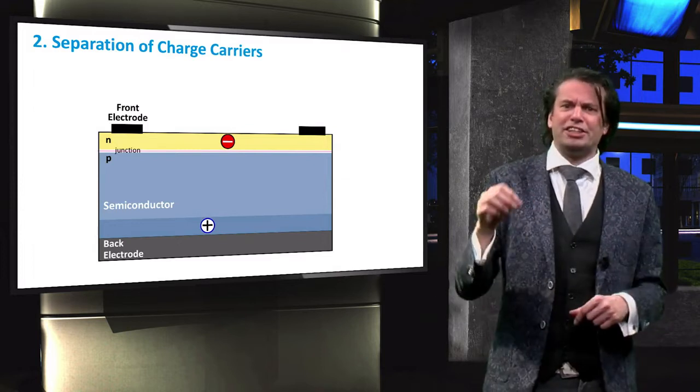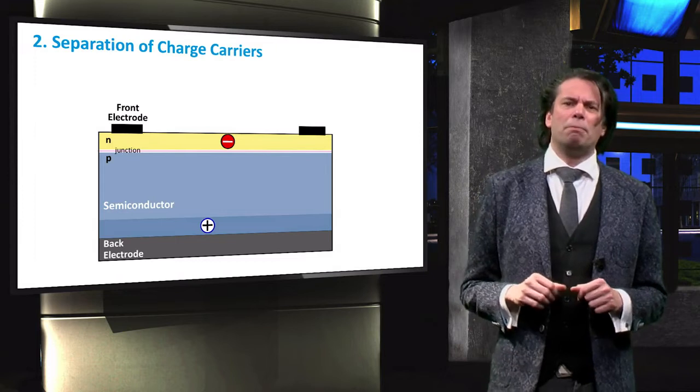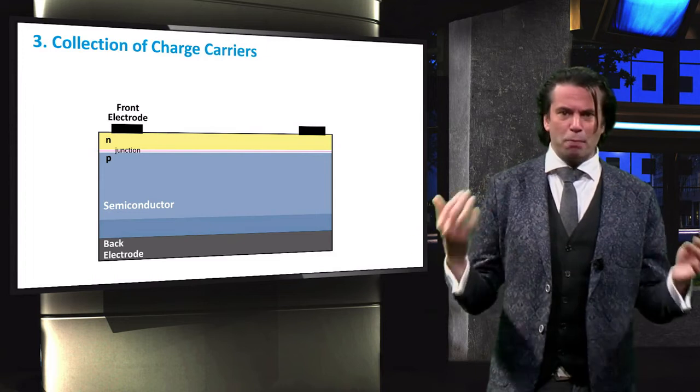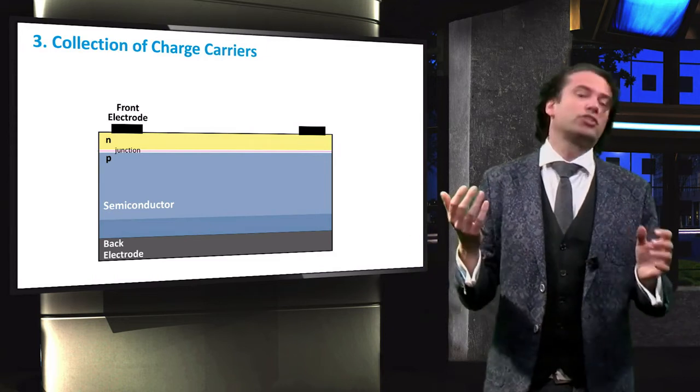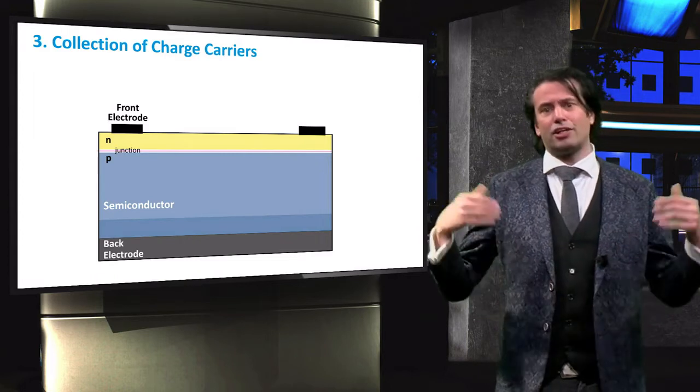So now we have generated and separated charge carriers. But we have one more step to generate electricity. The final process then involves the collection of the photo-generated charge carriers. Let's start over again.